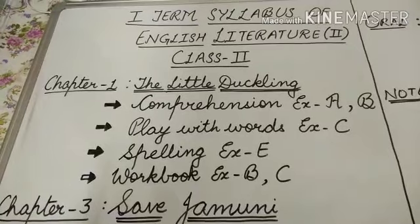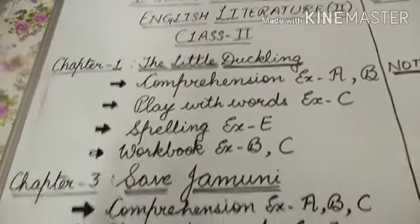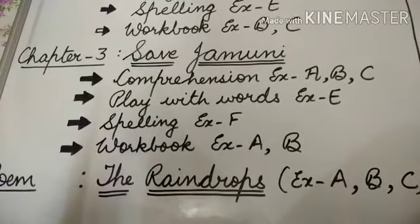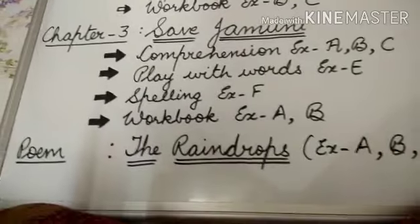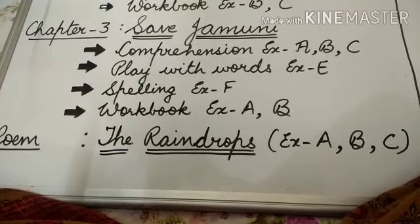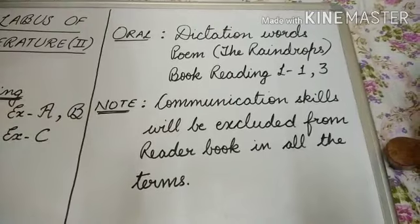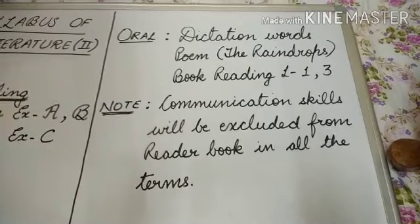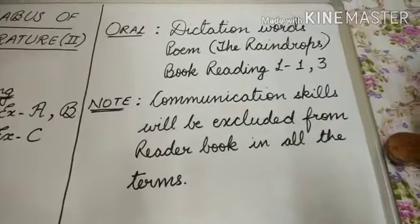Lesson 1, The Little Duckling. Lesson 3, Save Jamuni. Poem, The Rain Drops. Then Oral, Dictation Words, Poem, and Book Reading of Lessons 1 and 3.